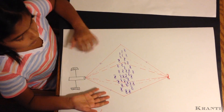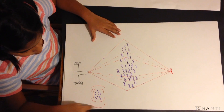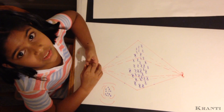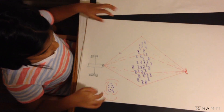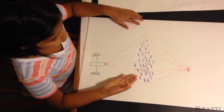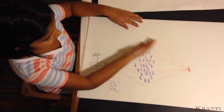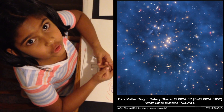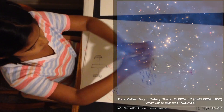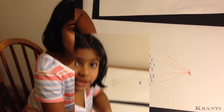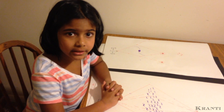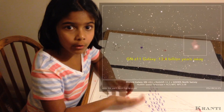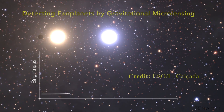We can calculate the mass of a galaxy cluster by knowing how much distortion we can see of the background galaxy. Scientists figured out that the distortion of the background galaxy is not only due to the galaxy cluster, but is also due to invisible matter known as dark matter that surrounds the galaxy cluster. Using gravitational lensing, scientists can see the effects of dark matter and can observe very far away stars, galaxies, and exoplanets.